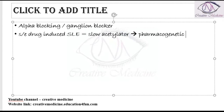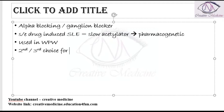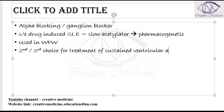In slow acetylators, drug-induced SLE is seen. Procainamide can be used in Wolf-Parkinson-White syndrome and is also a second or third line choice for the treatment of ventricular arrhythmias. Specifically, it is used in the treatment of sustained ventricular arrhythmias with acute MI.